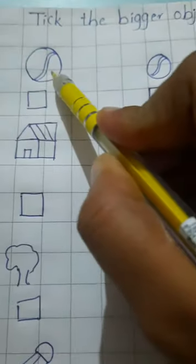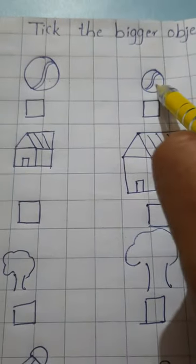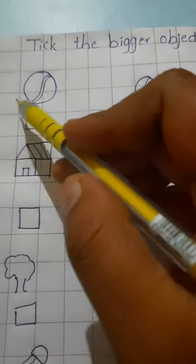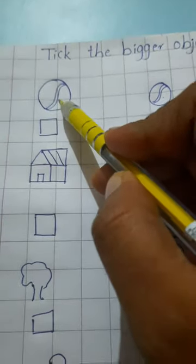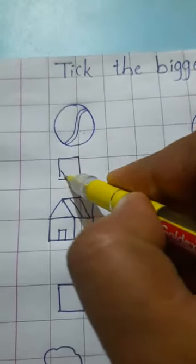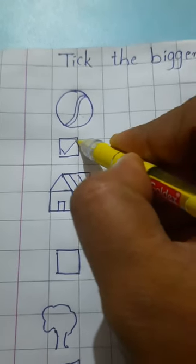So this is the ball and this is also ball. But which is the bigger one? Bada wala kaun sa hai? Ye wala bada hai. So you have to tick mark on this object. This is the tick mark.